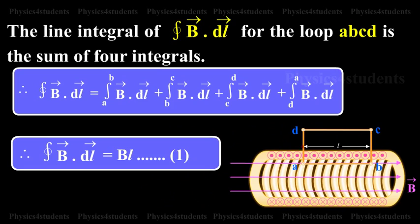The line integral of closed circuit vector B dot vector dl for the loop ABCD is the sum of four integrals.